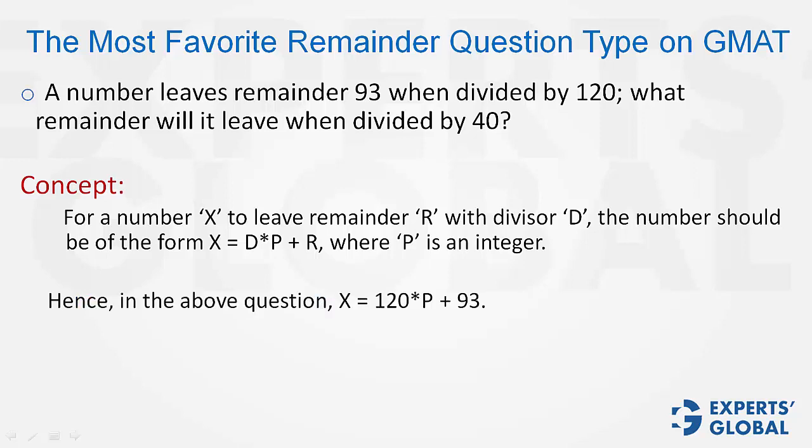For example, in this case, the number we are looking for, let's say X, has to be of the form 120 into a positive integer plus 93. That is why 120P is leading to a remainder of 0, and 93 is leading to a remainder of 93. Therefore, practically, the remainder is 93.